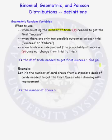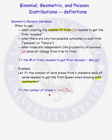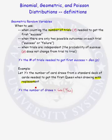Let's consider one more example. If we let y be the number of card draws from a standard deck needed to get the first queen when drawing with replacement, then y — the number of draws — will have a geometric distribution with parameter 4/52. Why? Because we are counting the number of trials needed to get our first queen. There are only two possible outcomes — either I get a queen or I don't — and trials are independent because I'm drawing with replacement. The probability of drawing a queen remains 4/52 on every draw. So y has a geometric(4/52) distribution.